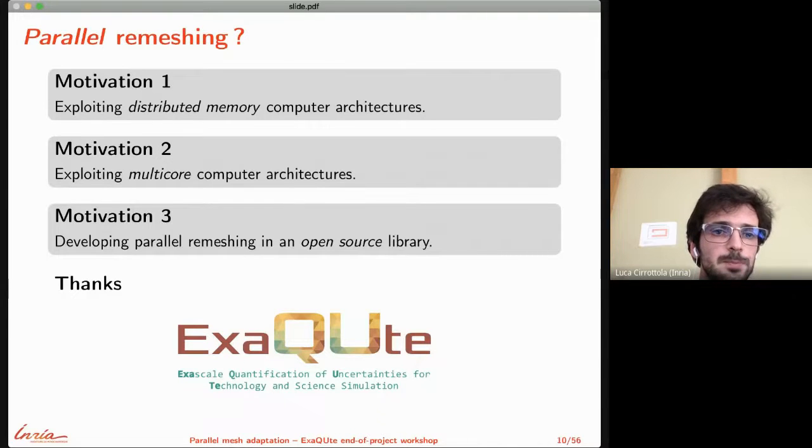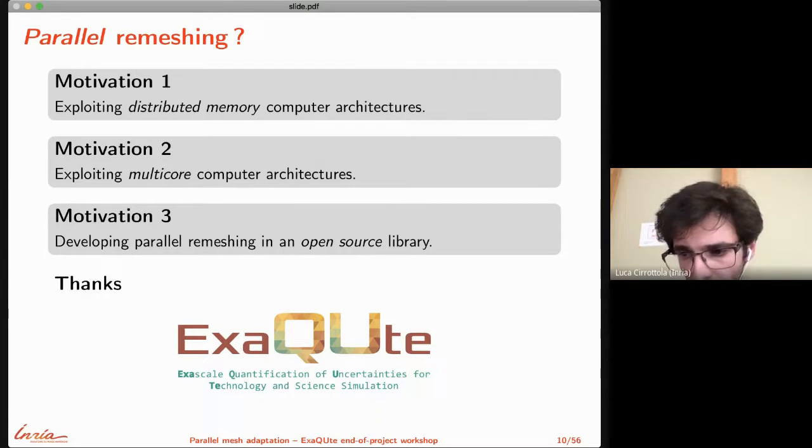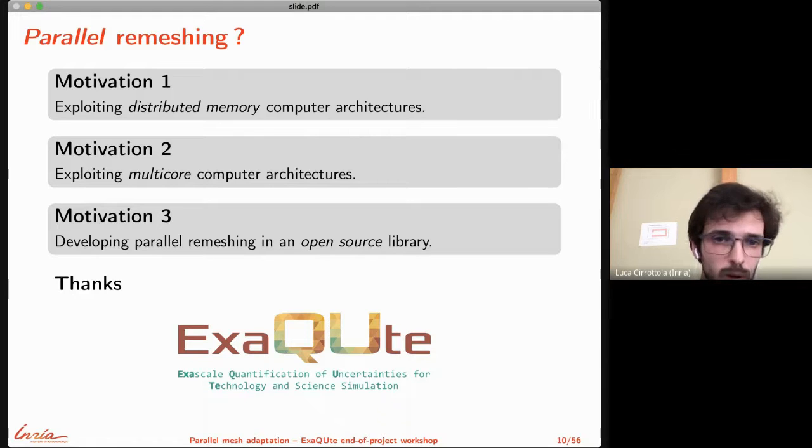When working with a parallel solver, adaptation may require generating so many elements and nodes in the final mesh that the remeshing cannot be handled on a single computing node. Going parallel and exploiting distributed memory architectures is essential to use mesh adaptation effectively with parallel fluid dynamics solvers. This is the first motivation for research on parallel remeshing.